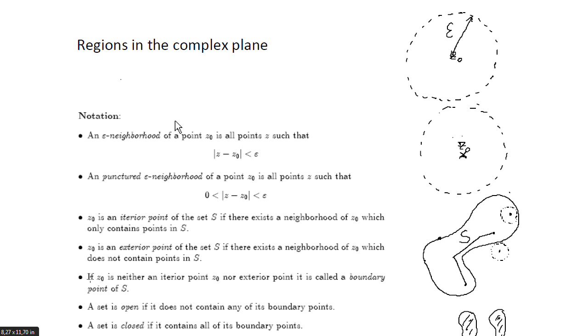Let's turn to the next item. If z0 is neither an interior point nor an exterior point it is called a boundary point. So that means that this point is lying on the boundary you can see here.